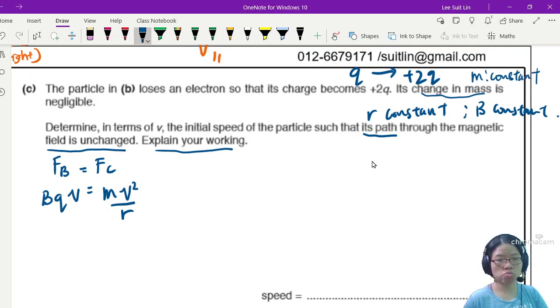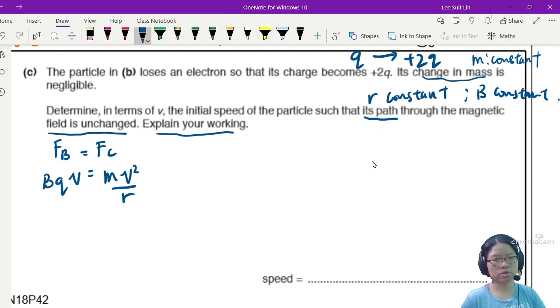So we have BqV equals mv squared over r. If it's the same particle with a different charge and mass is constant, change in mass is negligible. Everything is constant. Let us rearrange the equation. I want to find in terms of v the initial speed when q becomes 2q. So v here would be Bqr divided by m.